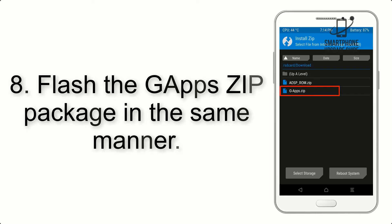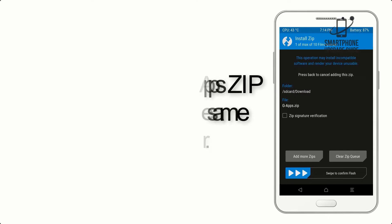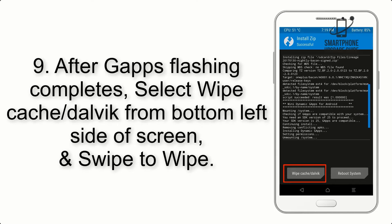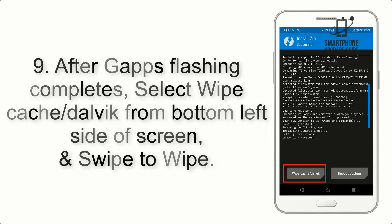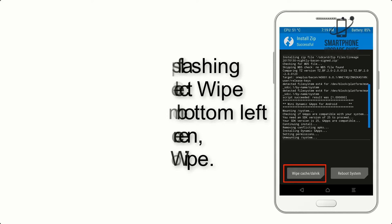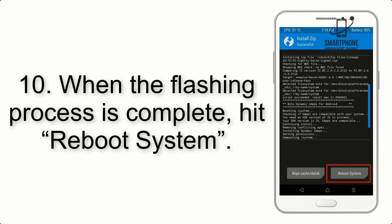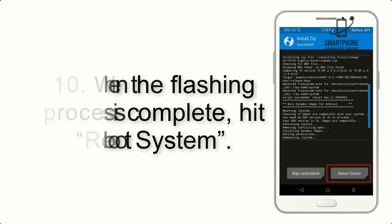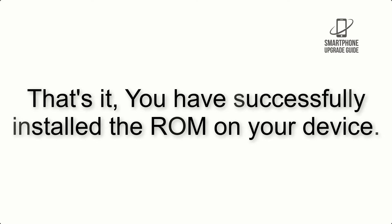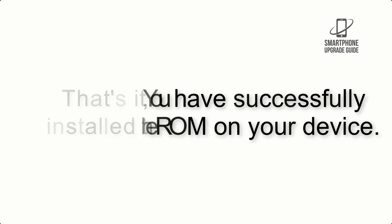Step 8: Flash the GApps zip package in the same manner. Step 9: After GApps flashing completes, select Wipe Cache and Dalvik from the bottom left side of the screen and swipe to wipe. Step 10: When the flashing process is complete, hit Reboot System. That's it — you have successfully installed the ROM on your device.